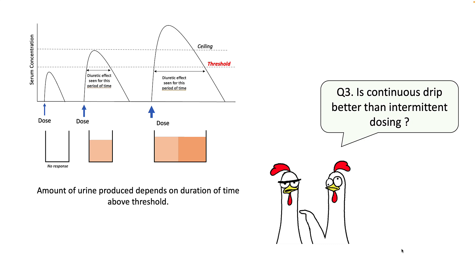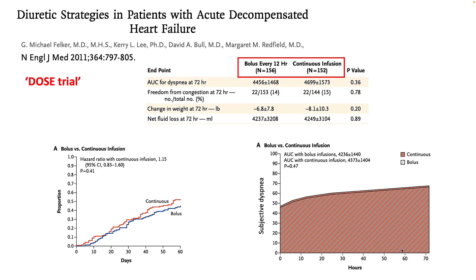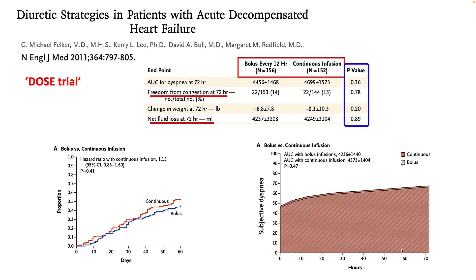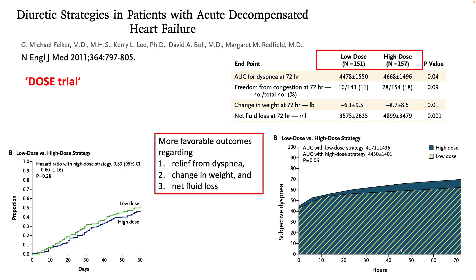Is continuous drip better than intermittent dosing? The amount of urine produced by a loop diuretic depends upon the duration of time it is above its threshold. The DOSE trial is most commonly quoted in this regard, where they compared bolus versus continuous infusion and did not find any significant difference in freedom from congestion or net fluid loss. However, they did find that higher dose was better than lower dose in improving dyspnea, change in weight, and fluid loss.